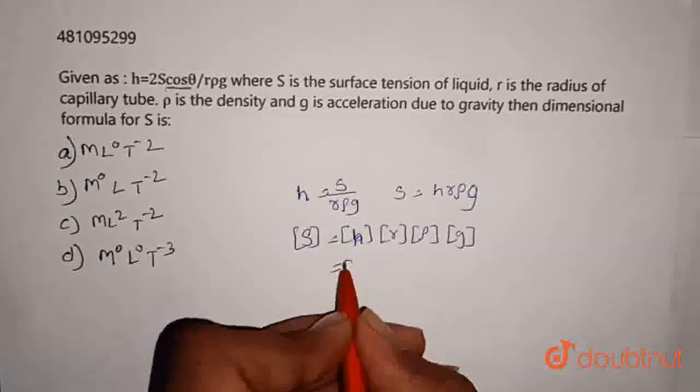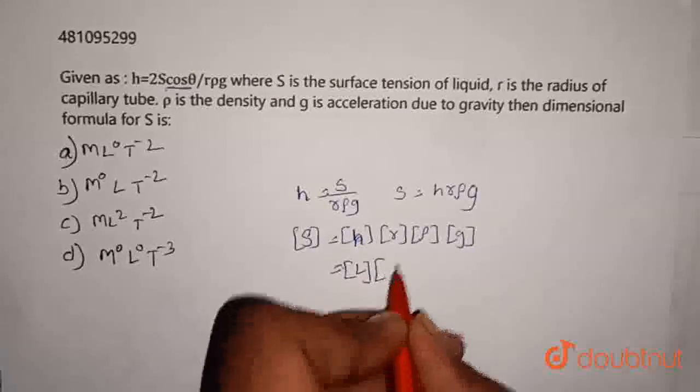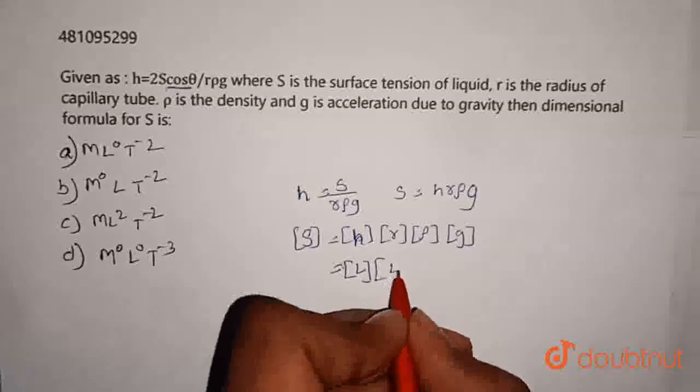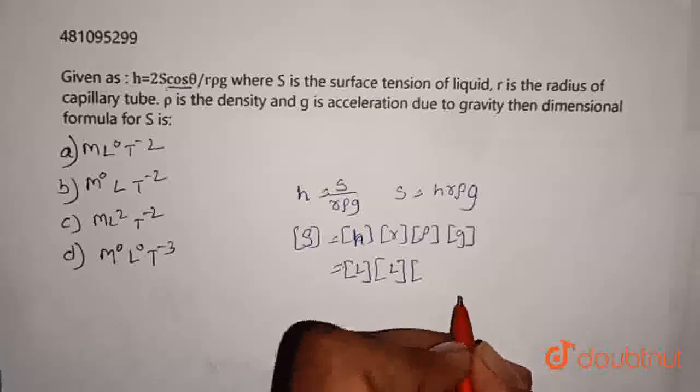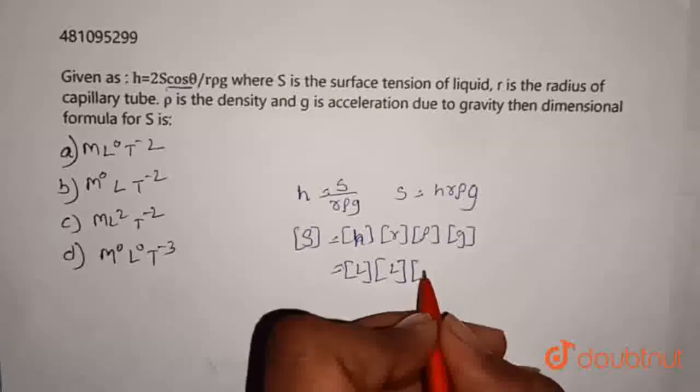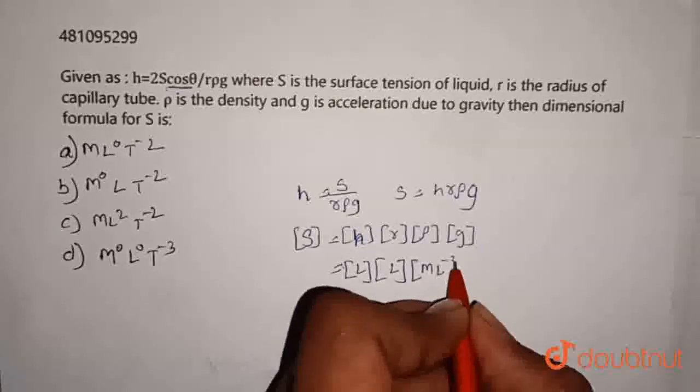h is length so dimensions of h is L. r is also distance which is length. rho is density which is mass per unit volume, mass is M and volume is L cube, that is ML^-3.